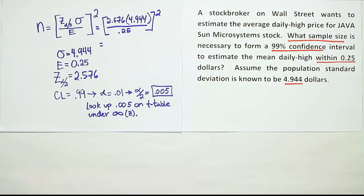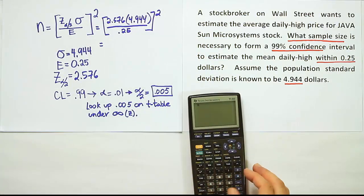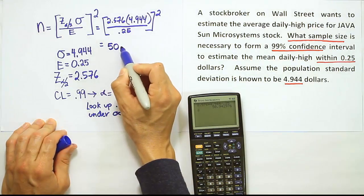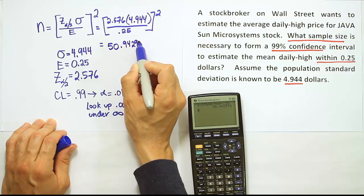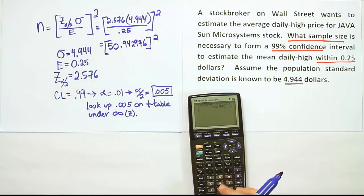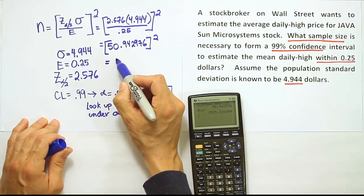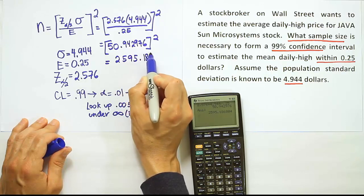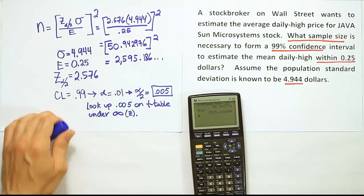Let's do this calculation on our calculator. And we want to talk about the rounding rule at the end here. So 2.576 times 4.944 divided by 0.25. So we end up with the answer 50.942976 or so, right? And then we're supposed to square that value. So let's square that answer. And when we're done, we get a pretty large sample size. We have 2,595.186 dot dot dot.